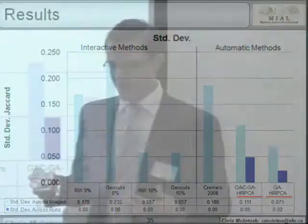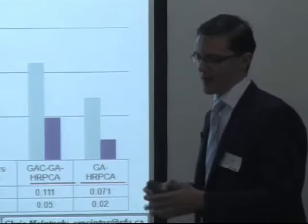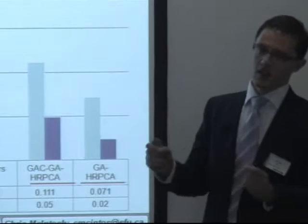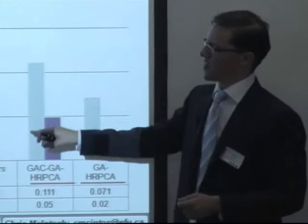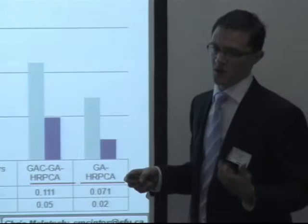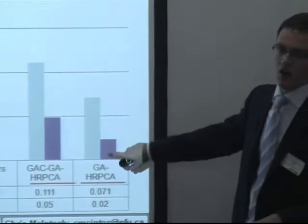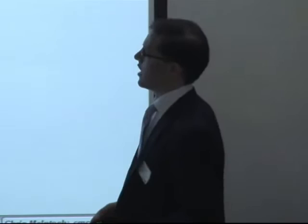Looking at standard deviation: the standard deviation from running multiple genetic algorithms on a single image is lower than the standard deviation introduced by running other methods across different images. This means the genetic algorithm optimizer is not the main source of error variability — the energy functionals are. Therefore, future work should focus on improving energy functionals, which would provide the largest decrease in error.